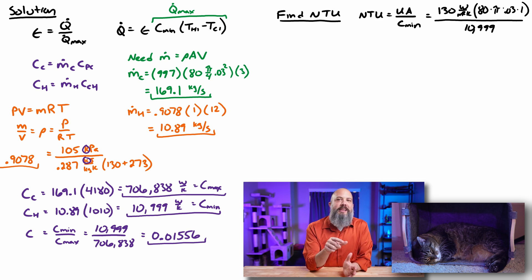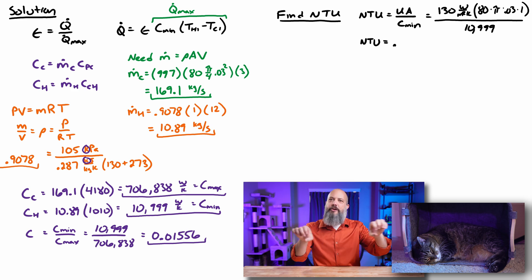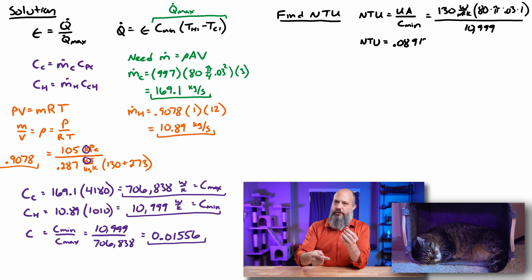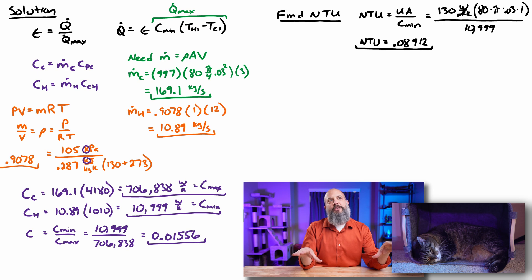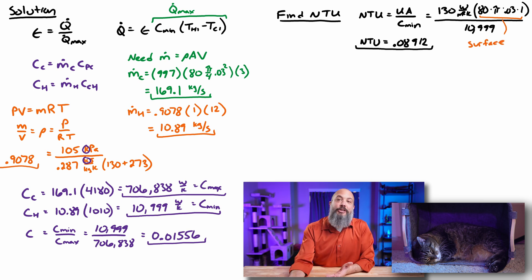And when we plug in for this problem, our UA of 130 for U and our surface area is the outer surface area of the cylindrical pipes. So pi times diameter is the circumference of the pipe times the length of one and then there are 80 of them. So that gives our surface area divided by the minimum value for C. So whichever flow has the minimum value for heat capacity rate is going to be the one that changes temperature the most. That's the one we're interested in. So this is the 10999, not the 700,000. We get a value of NTU once we do the calculator work, 0.089. This is a very small value for NTU, which gives us a little bit of a preview that we are not going to be very close to that maximum possible heat transfer rate.